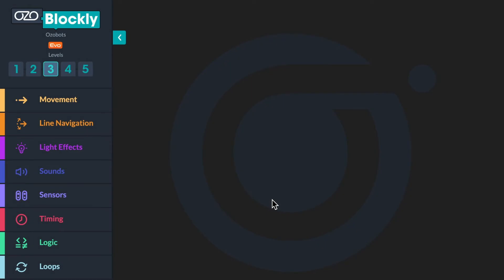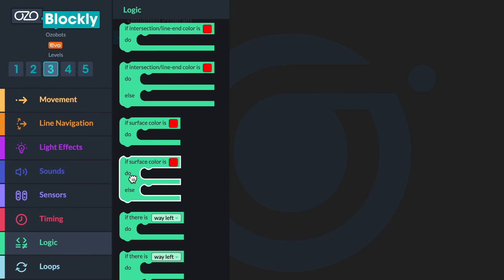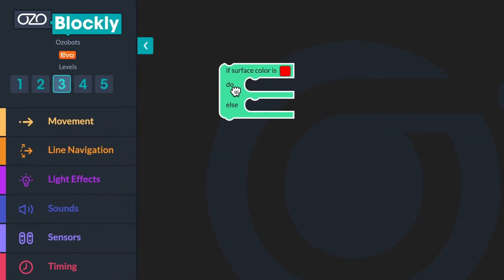Let's begin building the program with the color blue as a variable. Open up Ozoblockly and click on level three. Then go to logic in the block panel. Click the if surface color is red, do else block and drag it into your workspace. Next click on the red square inside the block and select the color blue.